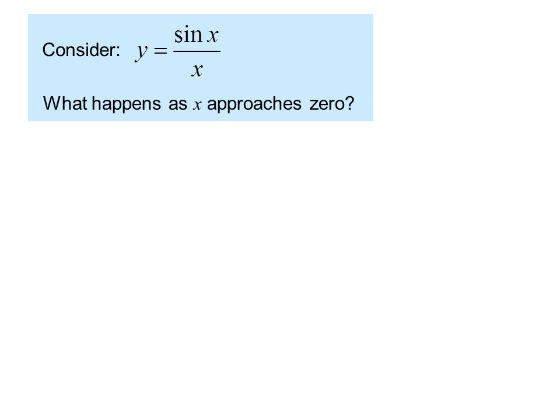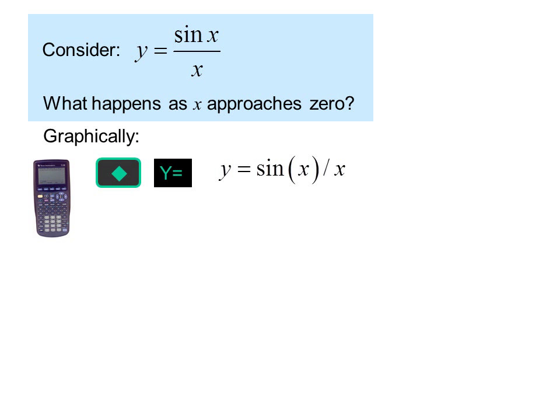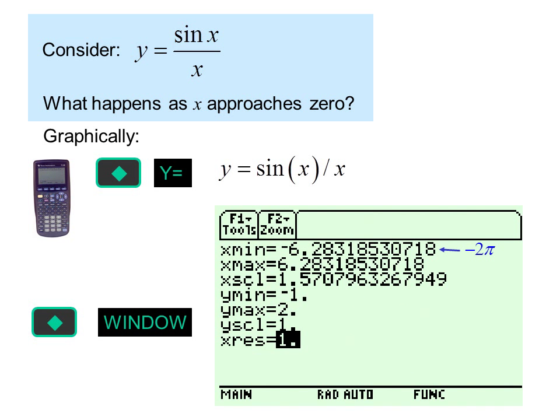New problem: consider y equals sine x over x. What happens as x approaches zero? Graphically, we could use diamond Y= and graph y equals sine x over x. We set our window to go from negative 2π to positive 2π, and we make x scale equal to π over 2. Notice that the calculator has converted the exact values to decimal approximations.